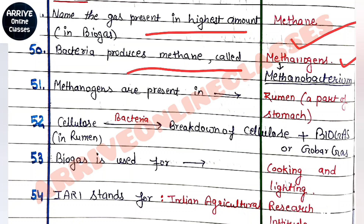Methanogens are present in cattle, specifically in the rumen part of the stomach. Cellulose breakdown also occurs in the rumen part of the stomach.